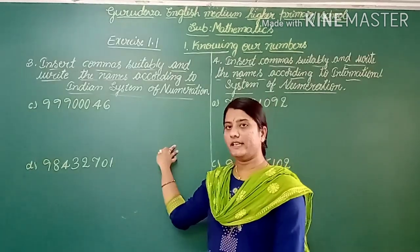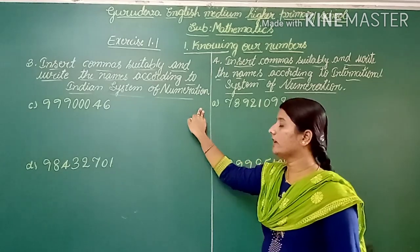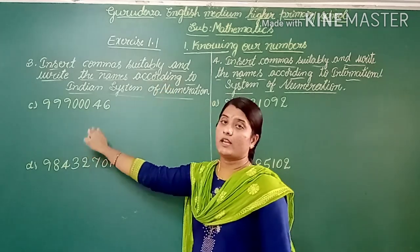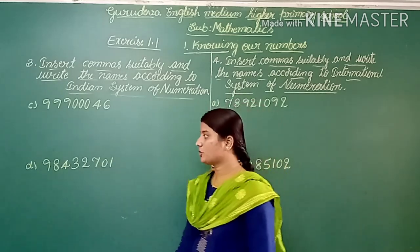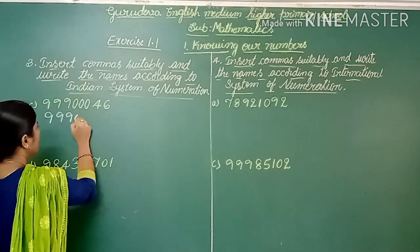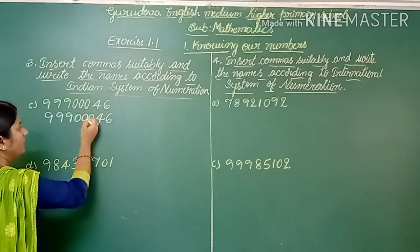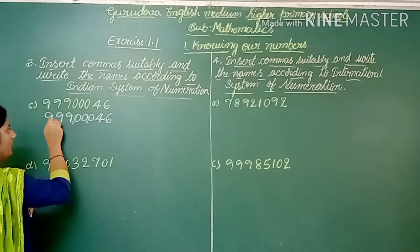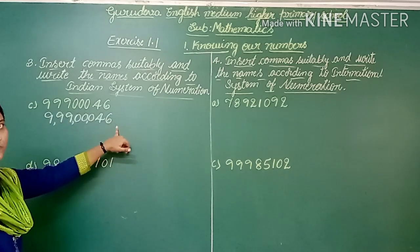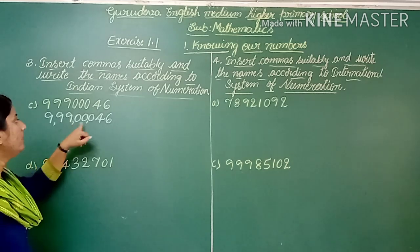Now the third section: insert commas and write the number name according to the Indian system of numeration. First number is 9,99,00,046. We count place values and put commas: ones, tens, hundreds, thousands, ten-thousands, lakhs, ten-lakhs, crore. Reading it: 9 crore 99 lakh 46.